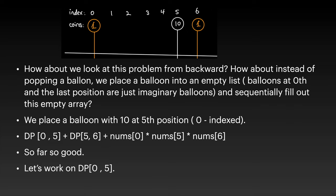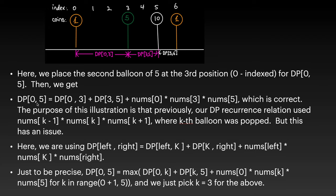So it works! You would have dp[left][k] + dp[k][right] + nums[left] * nums[k] * nums[right]. dp[0][5] would be dp[0][3] + dp[3][5] + nums[0] * nums[3] * nums[5]. This is correct. So our new recurrence relationship is: dp[left][right] = dp[left][k] + dp[k][right] + nums[left] * nums[k] * nums[right].